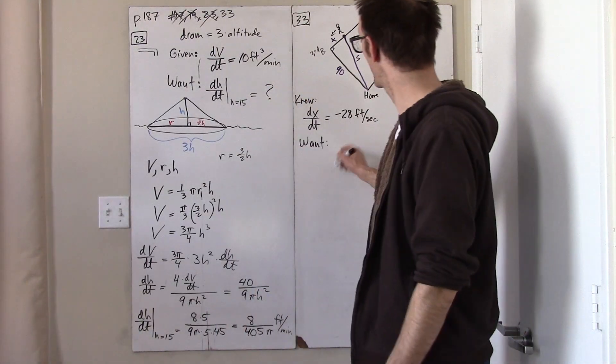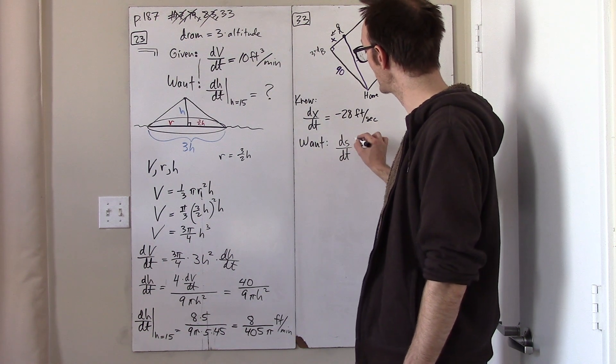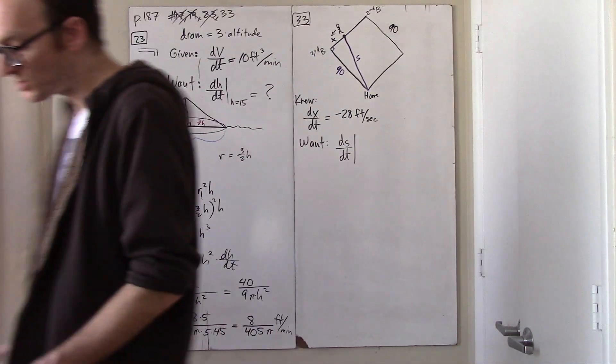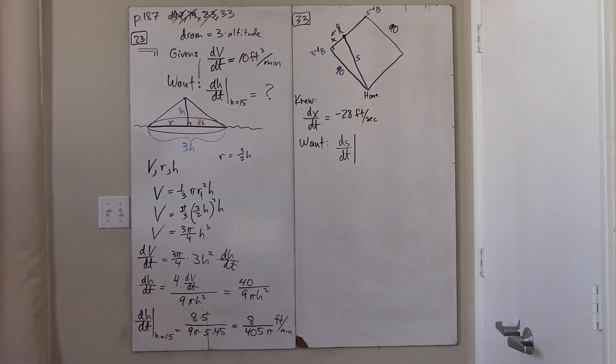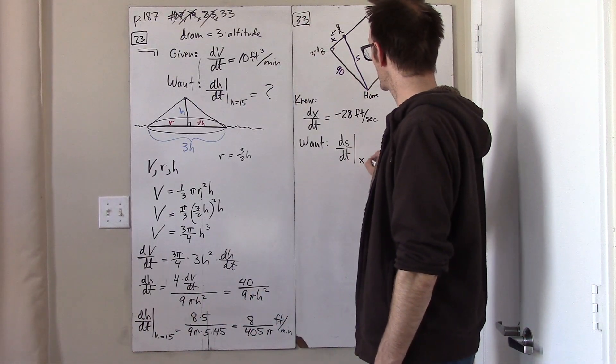So what we want to know is ds dt. But we don't want to know ds dt in general. We want to know what ds dt is for the particular moment at which the player happens to be 30 feet from third base. So, in other words, what is ds dt when x is 30?